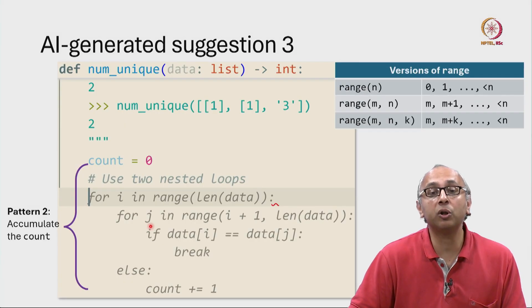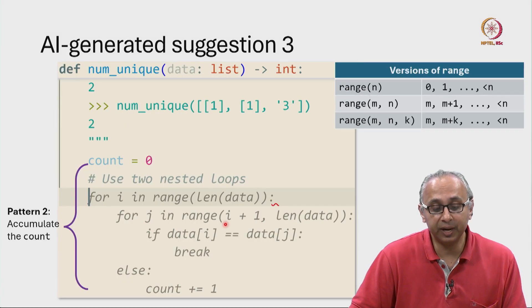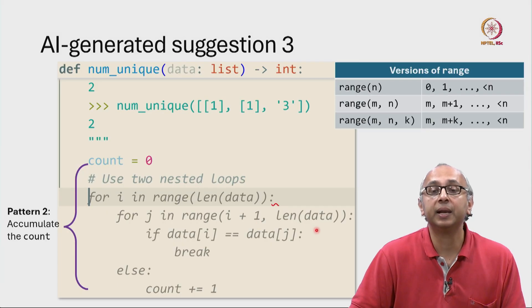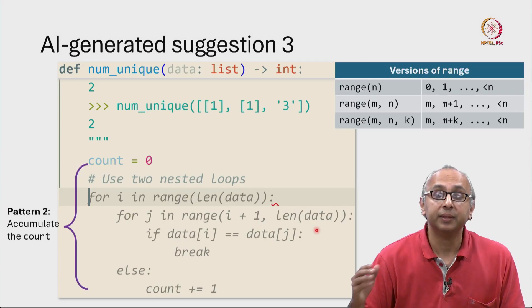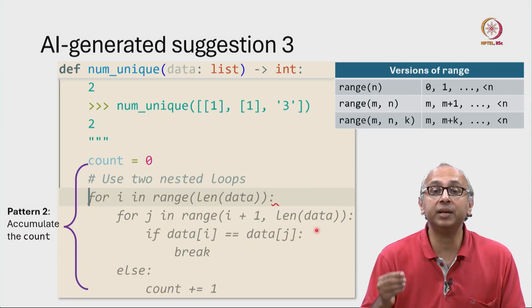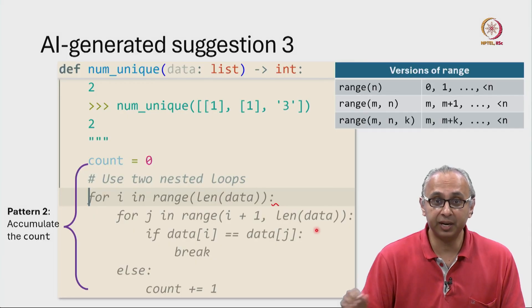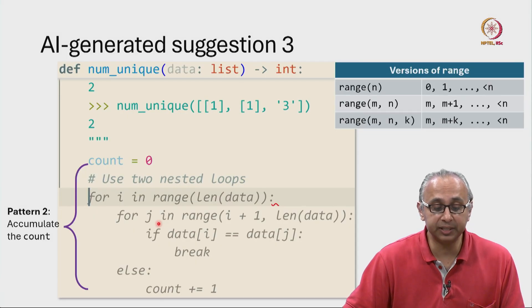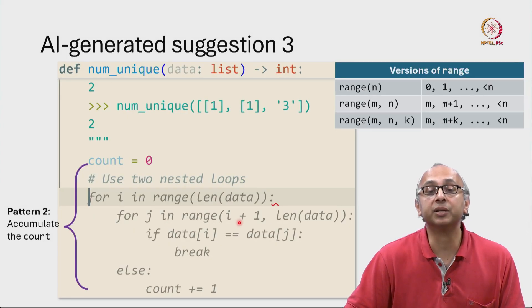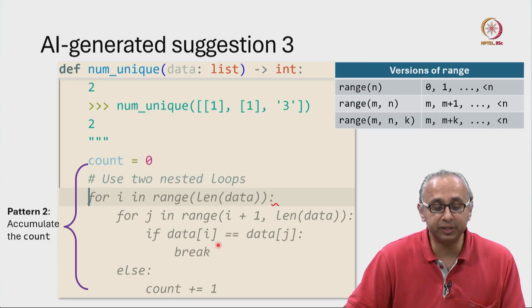We are examining all j's in the range i plus 1 up to but not including len of data. That is, we are examining all indices j that start after i. So given an i, we are looking at all the indices j starting at i plus 1. And then what are we doing? We are checking if data i and data j are equal.